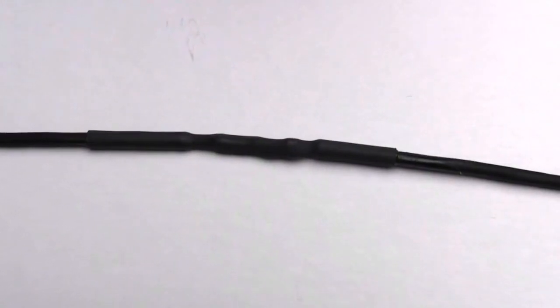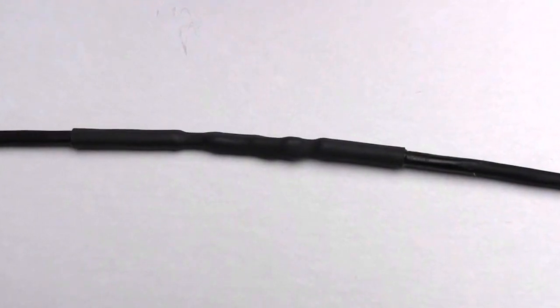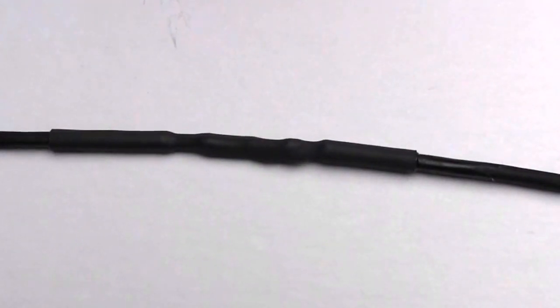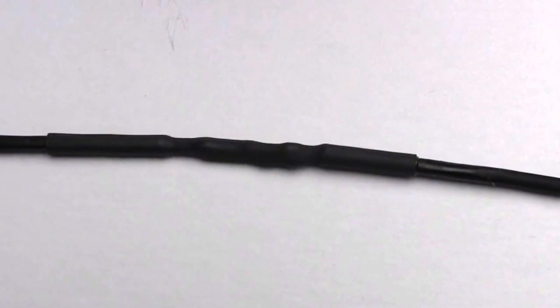Please note that the heat shrink will be flexible when warm, but will hold an angle if left bent while it's cooling. There may be a small amount of adhesive coming from the heat shrink ends. This is normal.